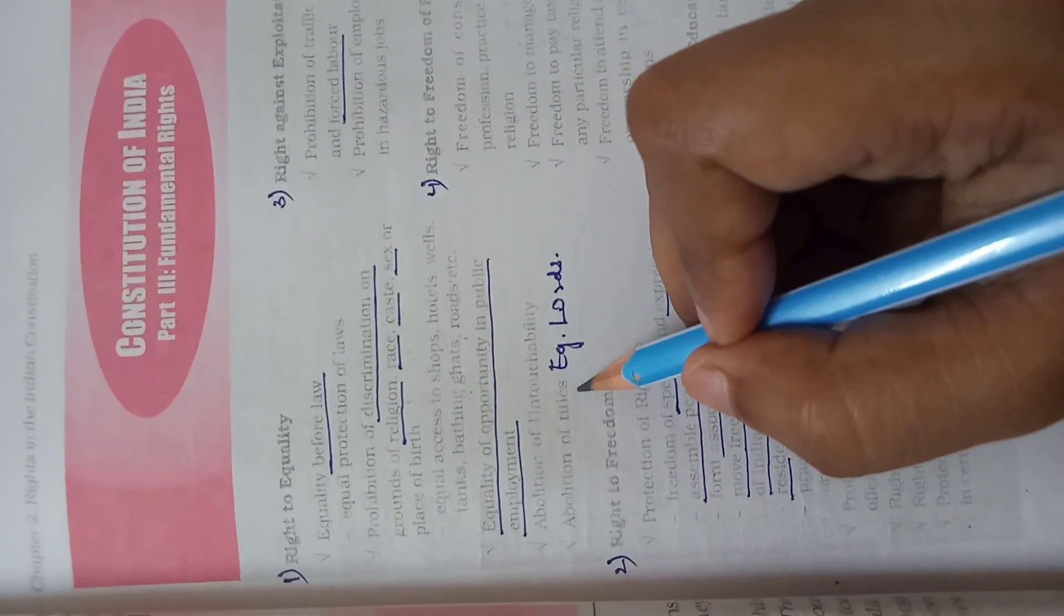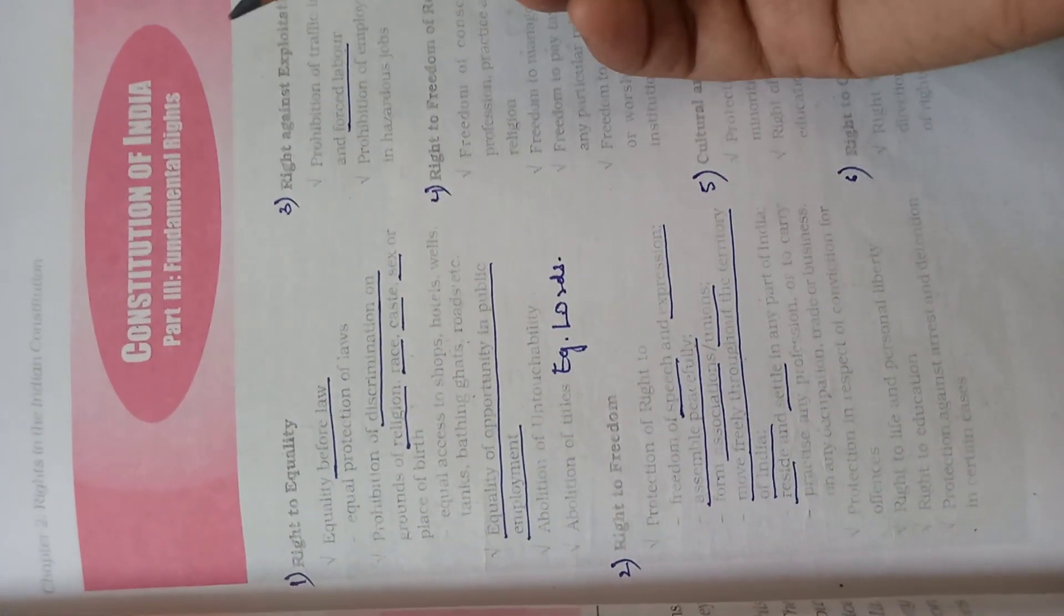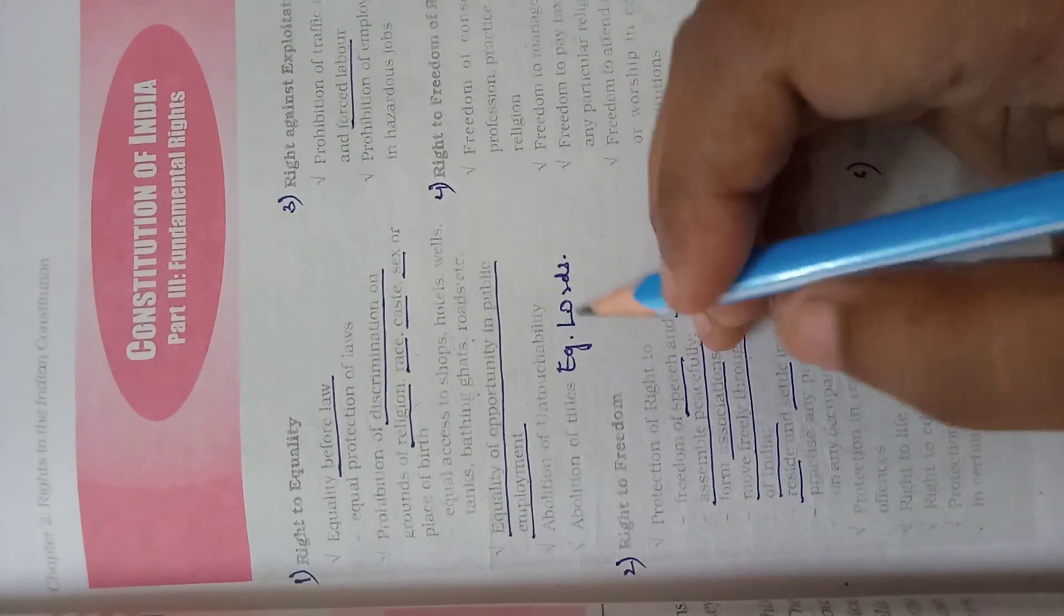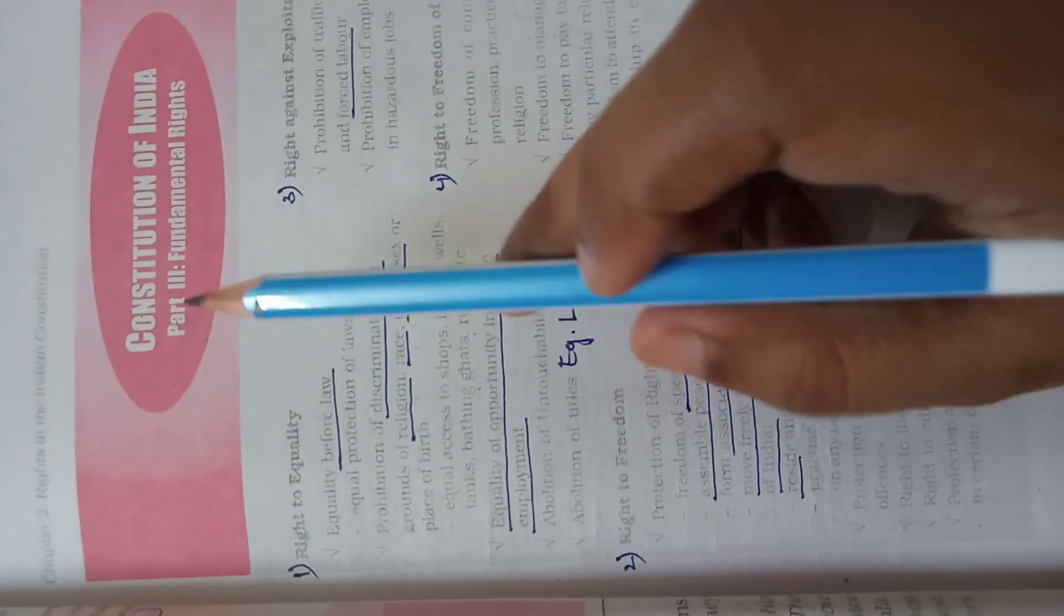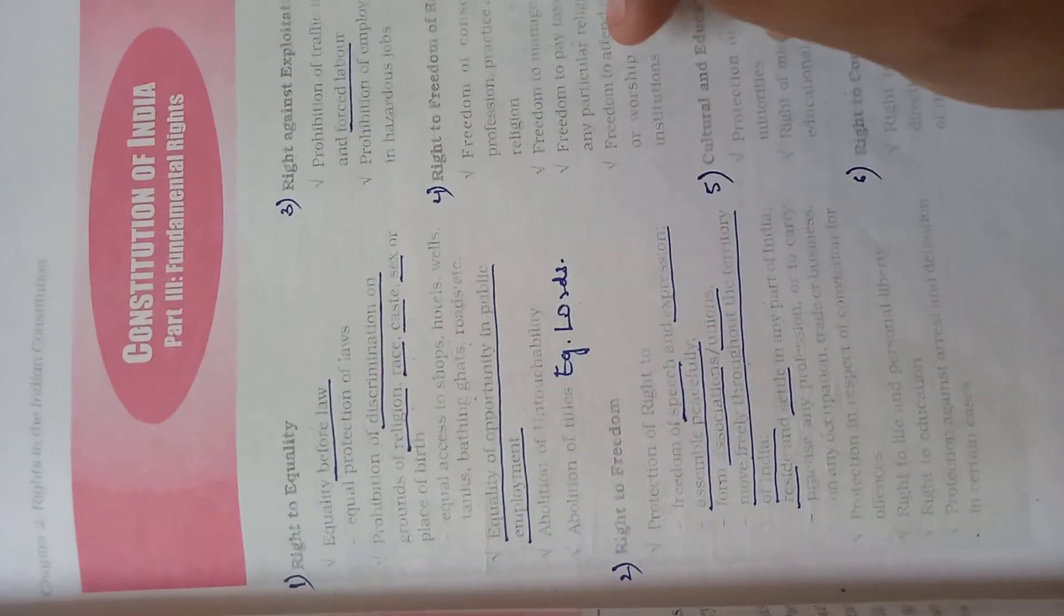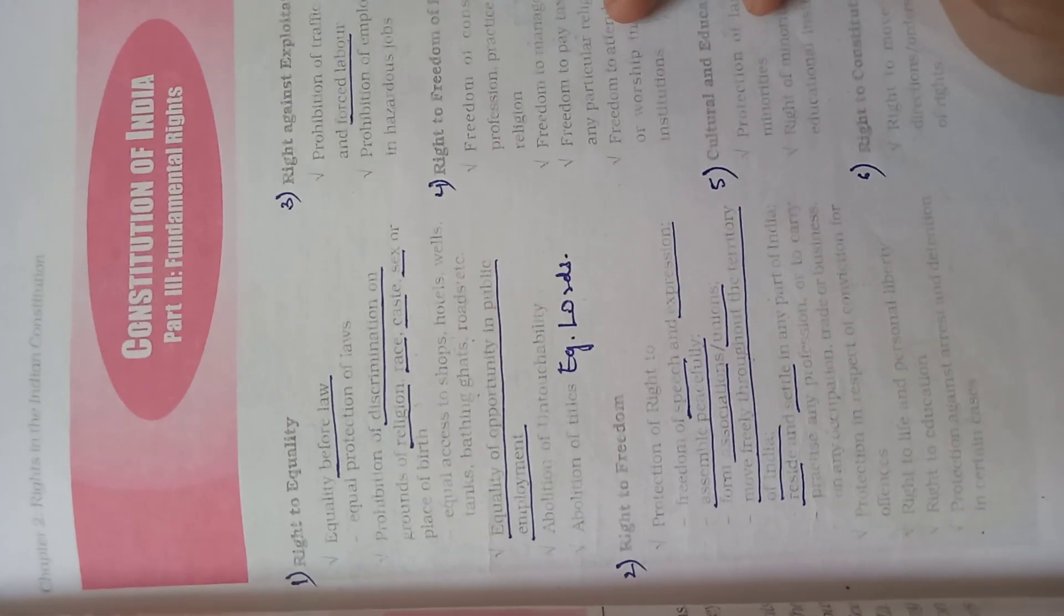And then we have abolition of titles. Titles basically means - you will read this in detail. Titles are used before names, like earlier people used Lords. Since we believe in equality, we don't use any such titles before names. We only use academic or military titles.